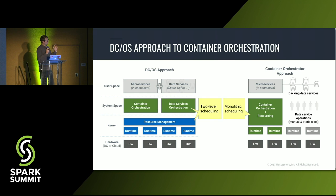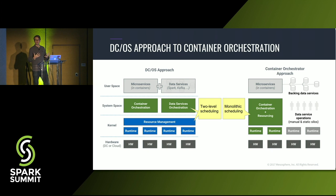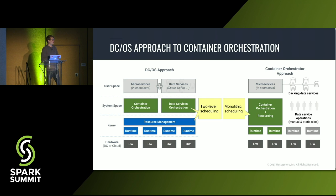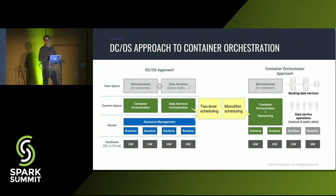The way DCOS does this is with a model called a two-level scheduler. You may be familiar with other container orchestrators that are built for running microservice-based applications in containers — they have a monolithic scheduler built for that purpose and are really good at running stateless containers. But for all the data services you need to back your stateless applications, they're not a good answer. You still have to figure out how to operate Cassandra using a standard container orchestrator, or run them on separate infrastructure, bringing back the same problems described earlier.